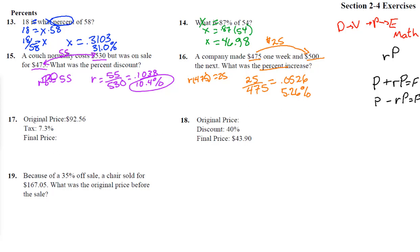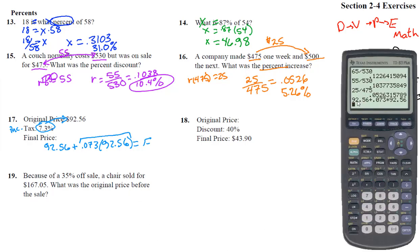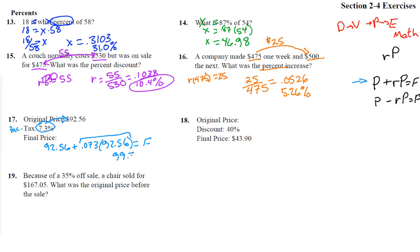All right, number 17. Original price is right here, and the tax is 7.3%. So this is an increase. Notice, we are going to be using this guy right here. That's 92.56 adds 0.073 times 92.56 equals our final price. So yes, we're taking the interest rate times the original amount. That's this guy right here, and that shows us the amount of increase. Then we add it on to the original, and we get, oh, better punch that in. There, that is punched in. 92.56 plus 0.073 times 92.56, and we get 99.32 if we round to the nearest penny.